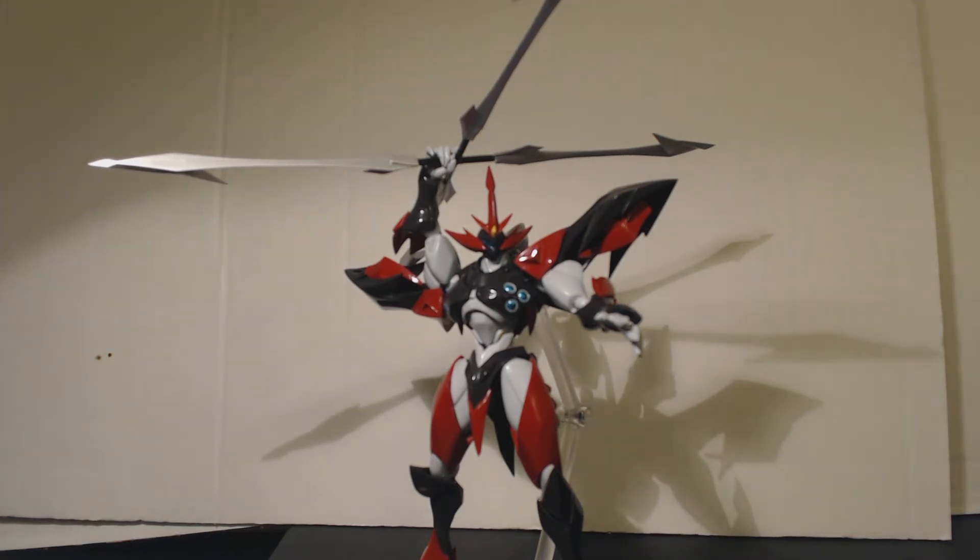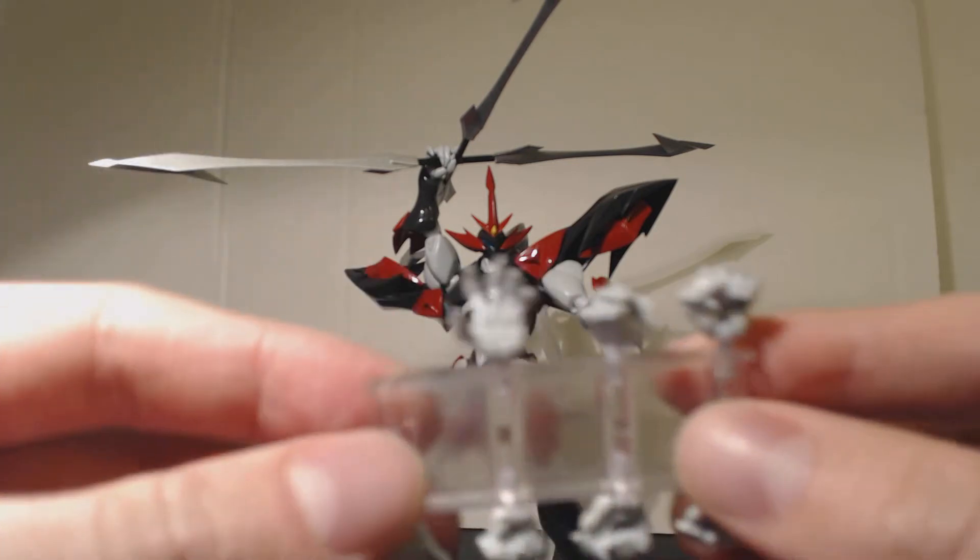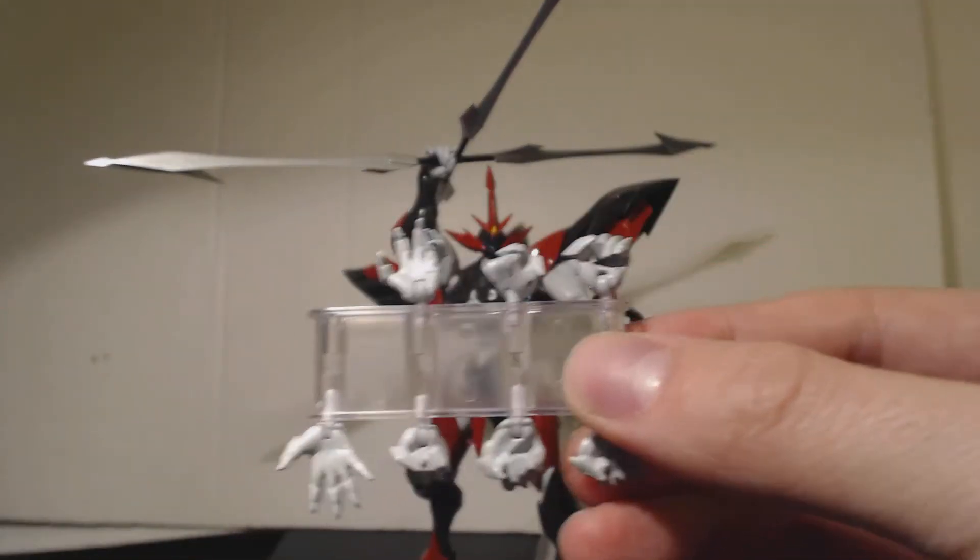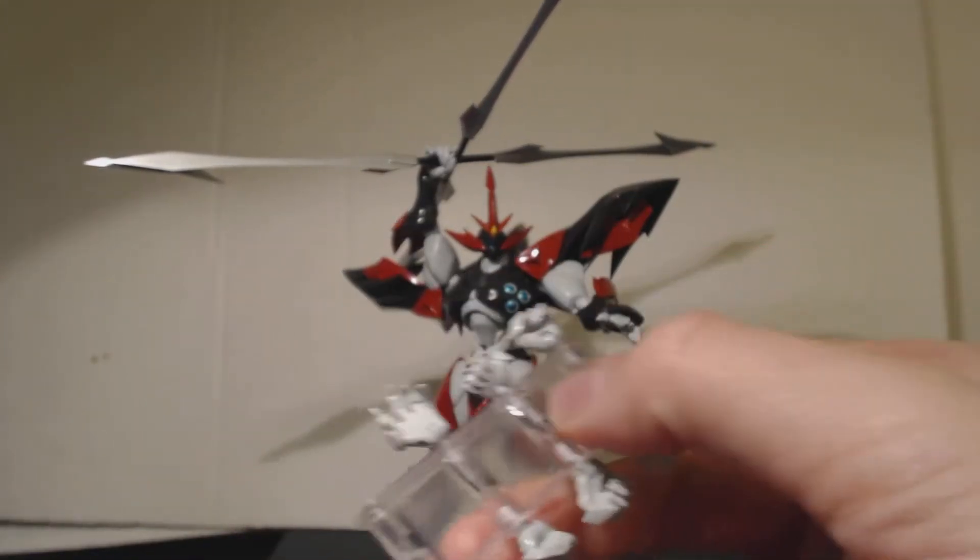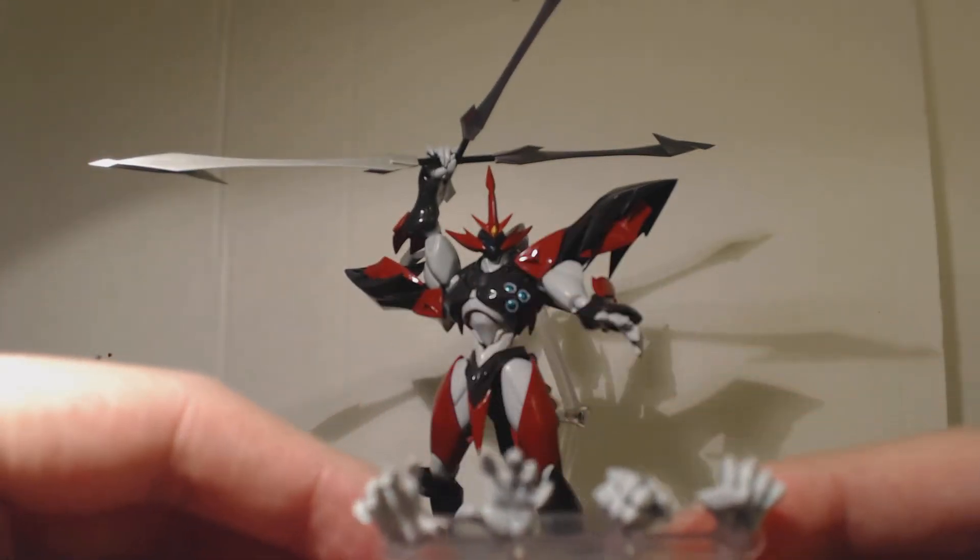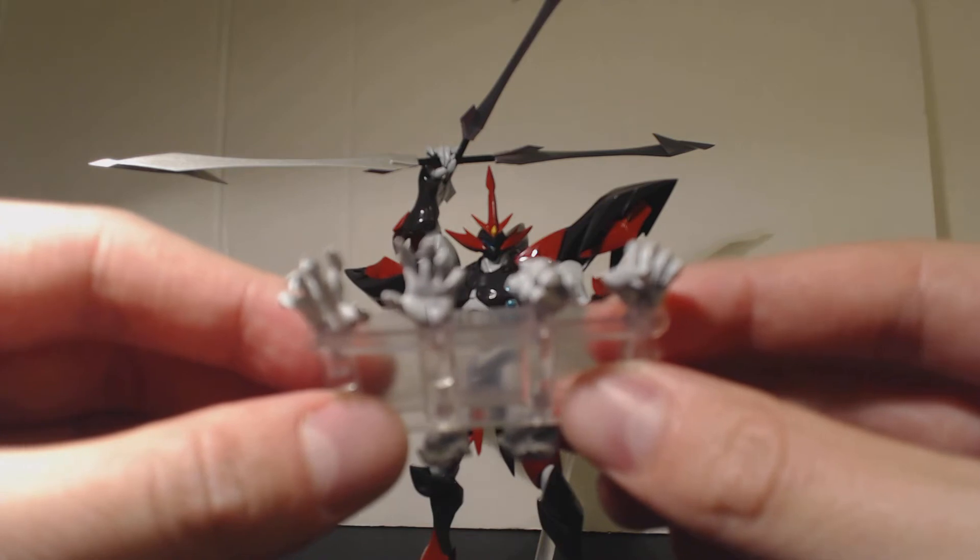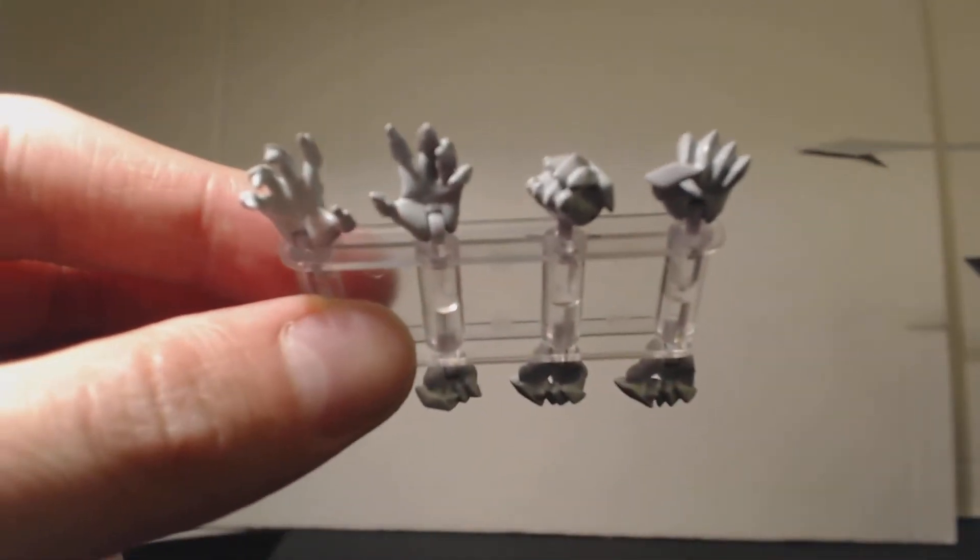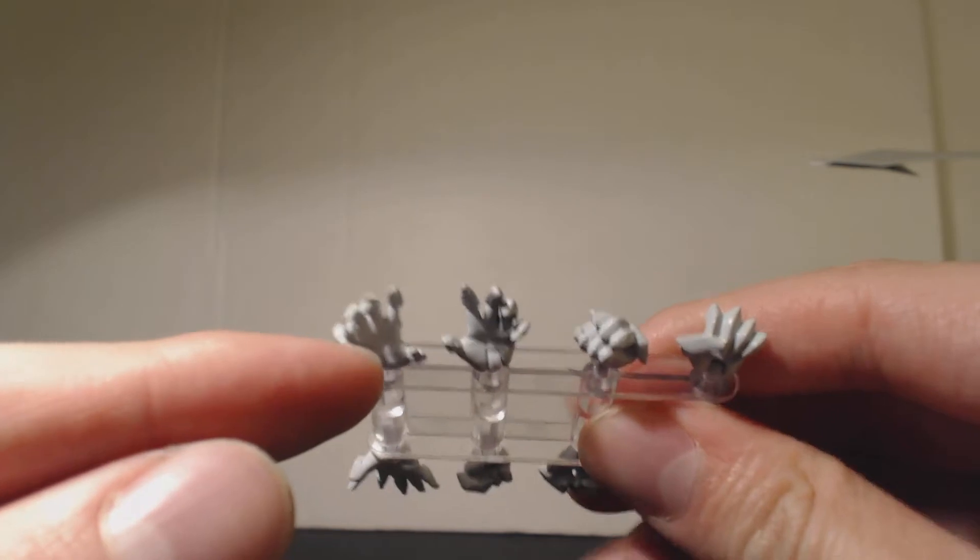Like Tekkaman Blade, this figure actually came with five pairs of hands. Let's have a look at them and see what they do. So we have five pairs of hands here that came with the figure. First off, you have your clawing hands, so as you can see these two are the clawing hands.